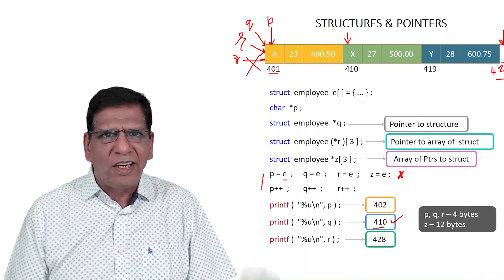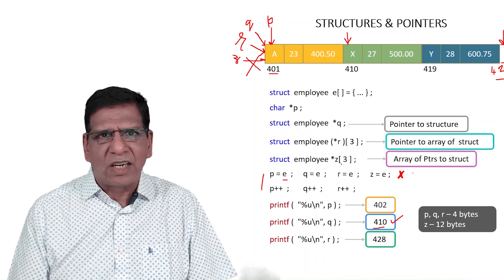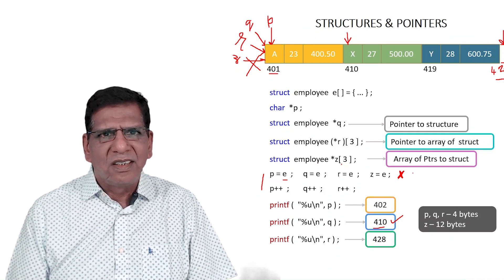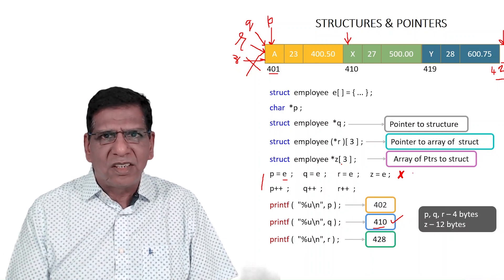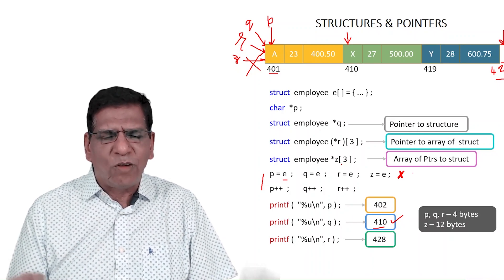I hope I have clarified enough the difference between different types of pointers, moreover the difference between pointer to an array of structures and an array of pointers to structures, those R and Z. Those are very vital. The rest I think is fairly straightforward. Bye and good luck.